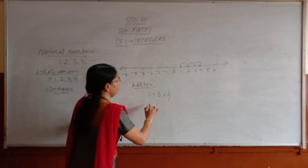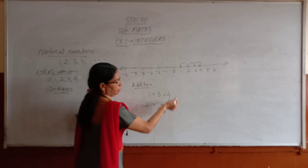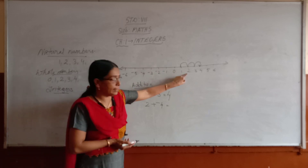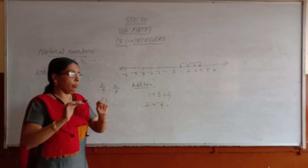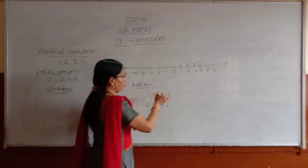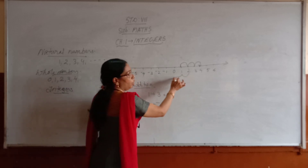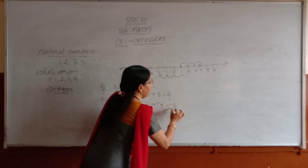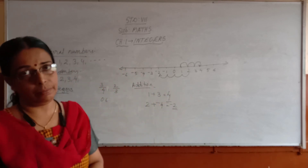Another example: 2 plus minus 4. Where is the number 2 on the number line? Here. How much you have to add? Minus 4 — negative 4 — that means you have to move towards the left. From 2, move 4 units towards the left: 1, 2, 3, and 4 — where it reaches: minus 2. So that is the answer. This is how you add integers using a number line.